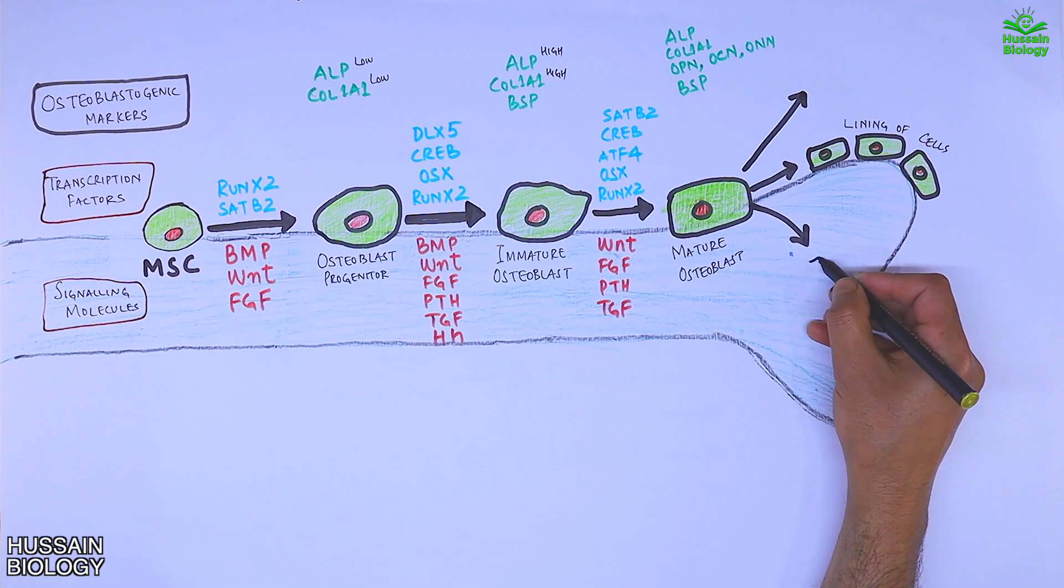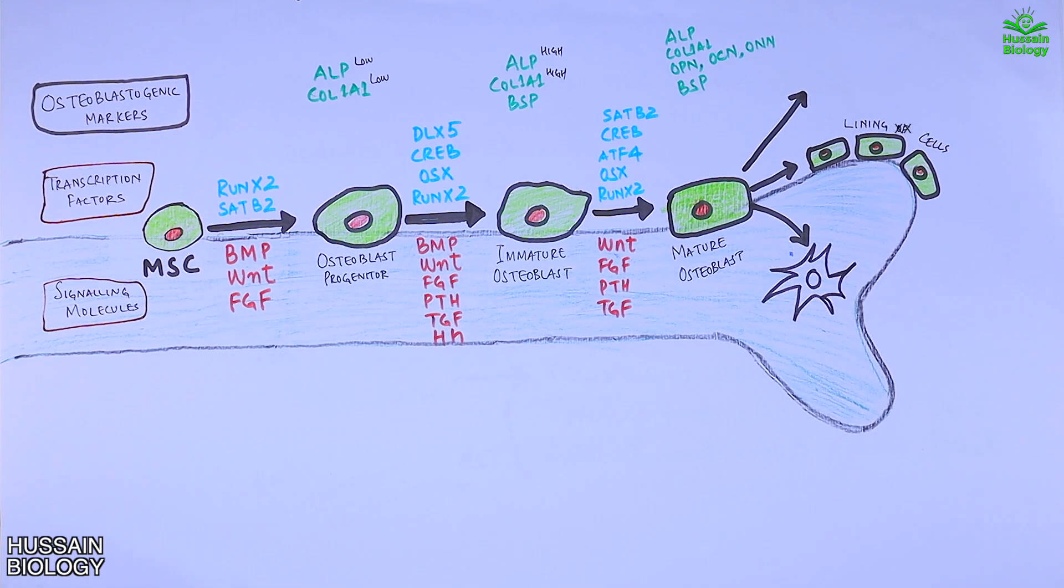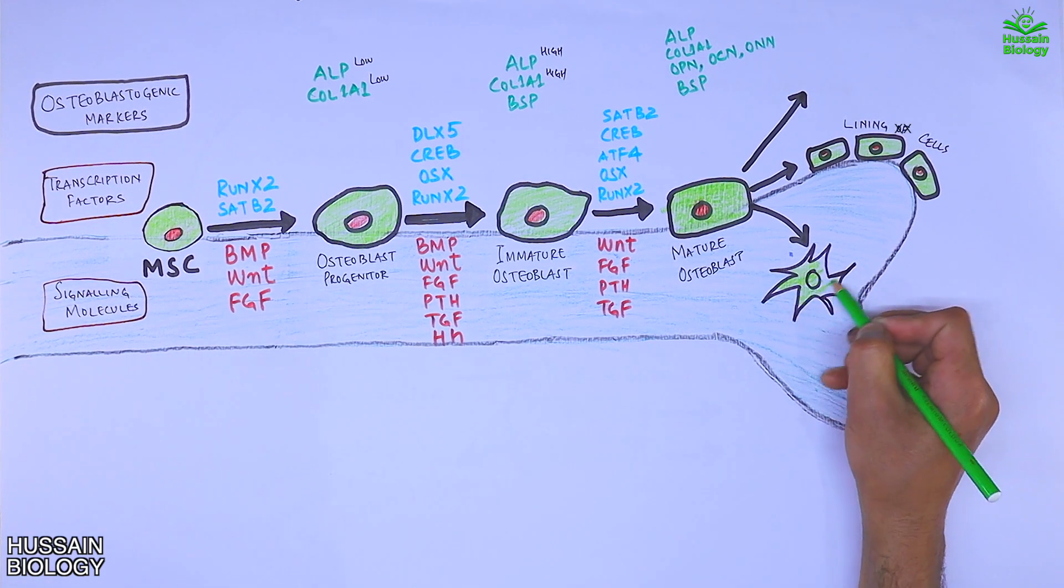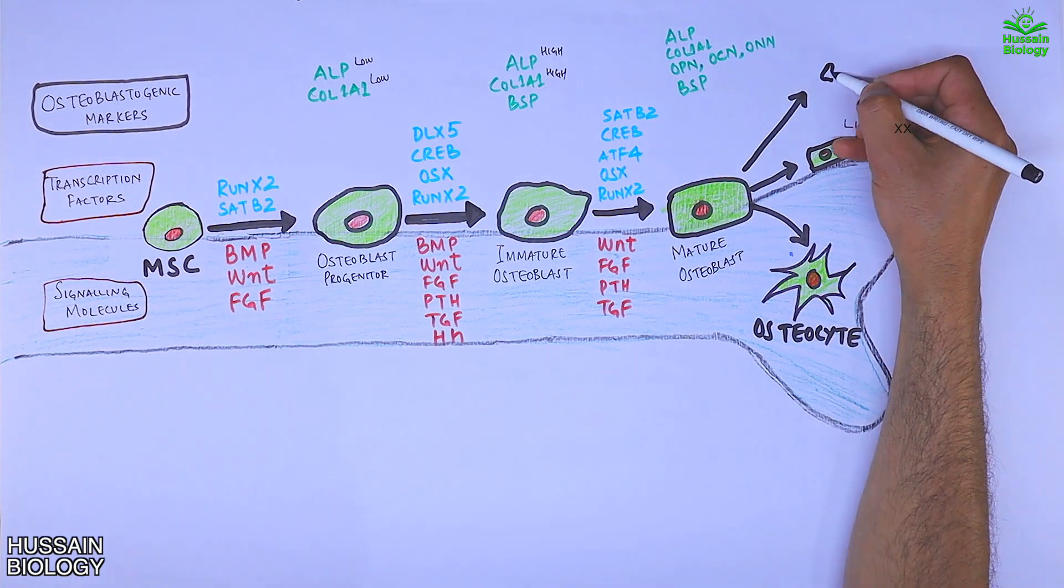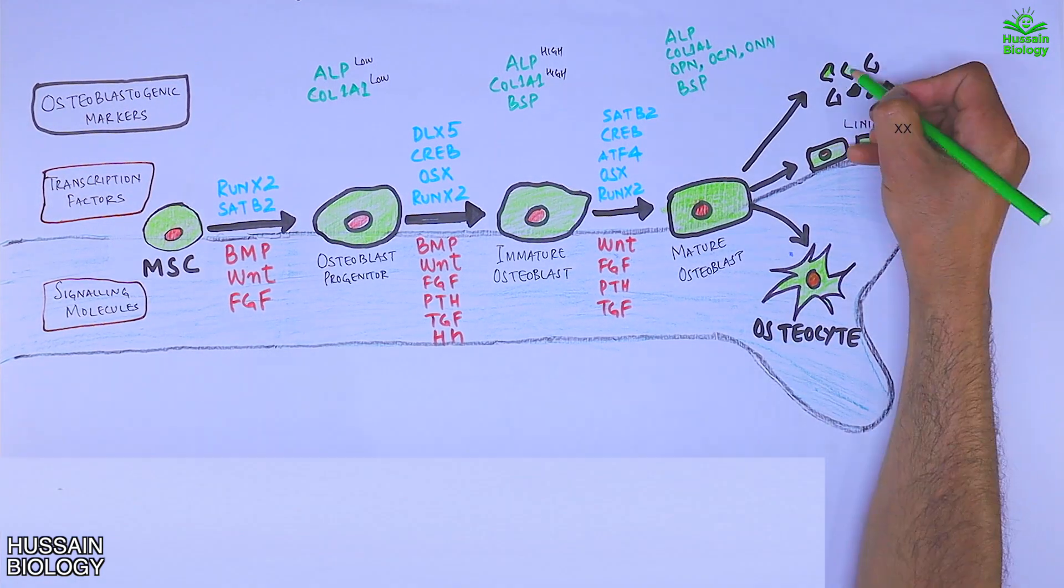Or into osteocytes, which are found within the bone tissue. If we do not need more osteocytes for the bone, then the osteoblasts are driven into apoptosis.